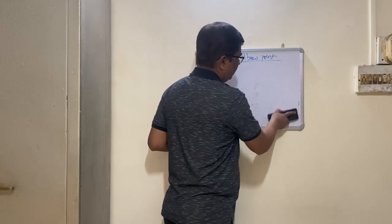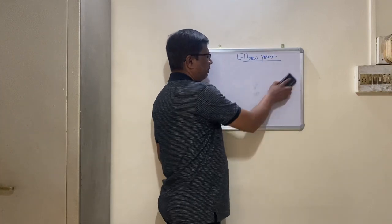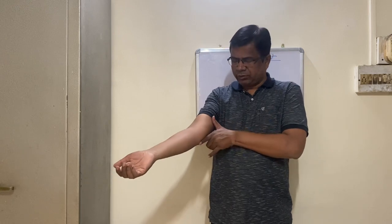The next point is relations. The anterior relations of the elbow joint are the floor of the cubital fossa — brachialis and supinator — and the contents of the cubital fossa: median nerve, brachial artery, biceps tendon, and superficial branch of the radial nerve. The posterior relation is the triceps muscle and the anconeus muscle.